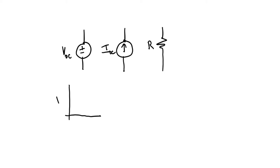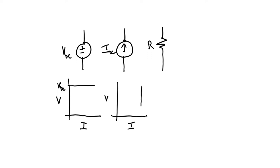If I plot V versus I for the DC voltage source, I'm just going to get a straight line. Let's make the same plot for the current source — plot I versus V for the current source. Then whenever I is at this special value, I get a straight line, so it doesn't matter what the voltage is; I'm always going to get the same current out of a current source.